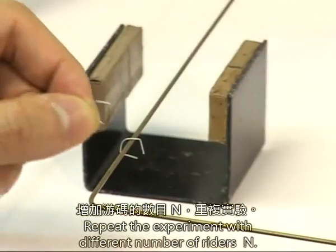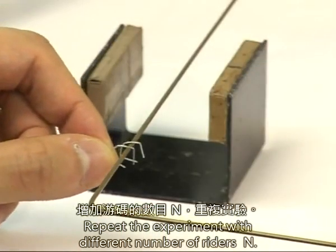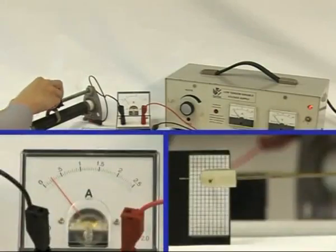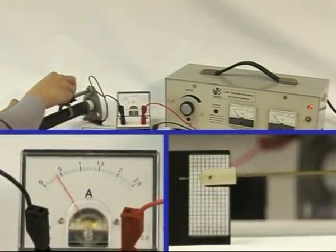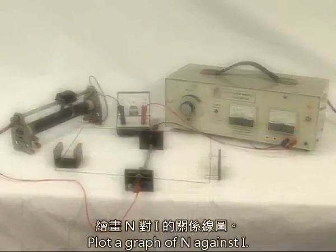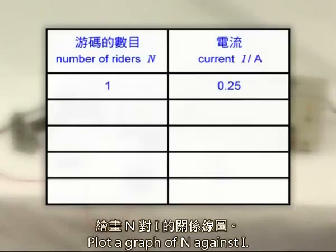Repeat the experiment with different number of riders N. Plot a graph of N against I.